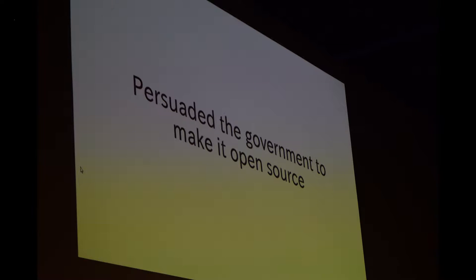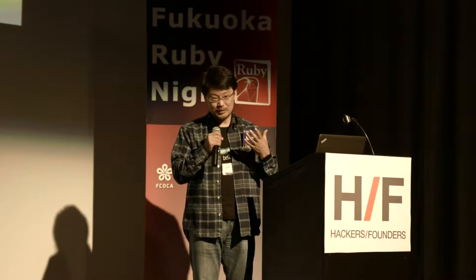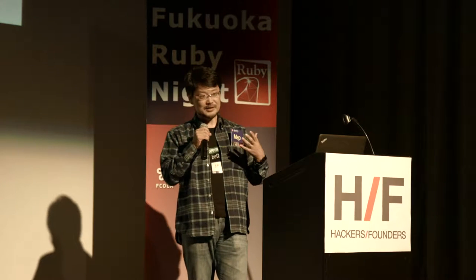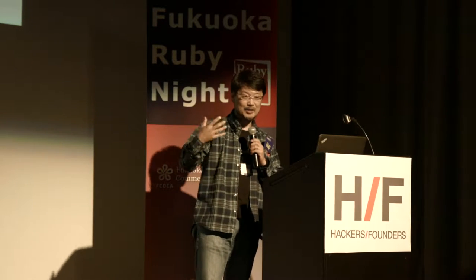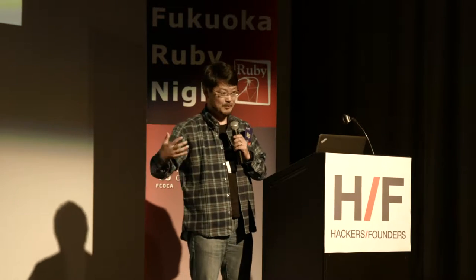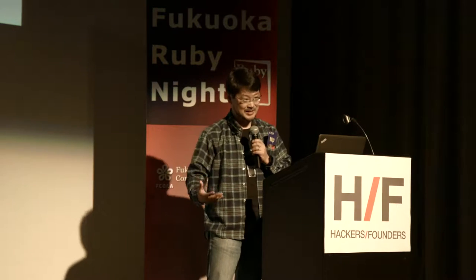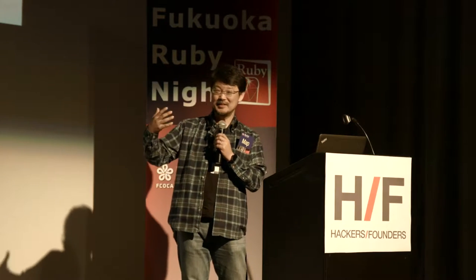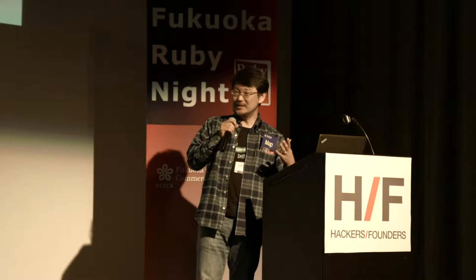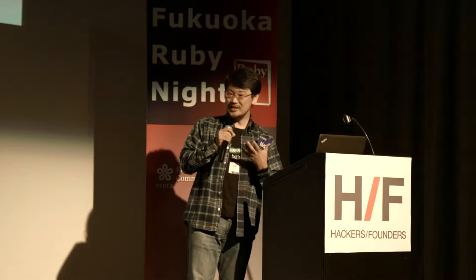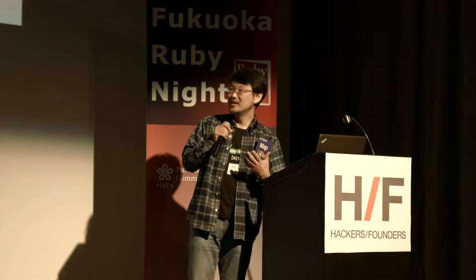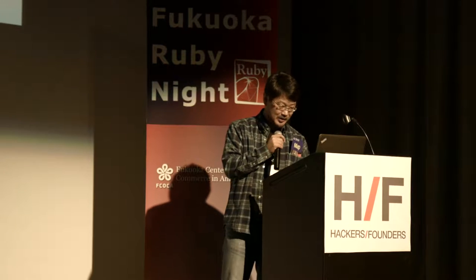The most difficult part was persuading the government to make it open source. People in the government think of software as a kind of property. They claimed that if we developed software using government money, they have to utilize it or sell it to make money. But we persuaded them — to build industry and encourage industry, it is crucial to make it open source. And they finally accepted, and we made it open source in 2012.